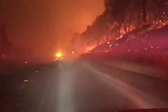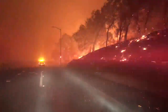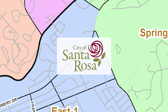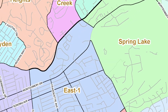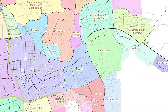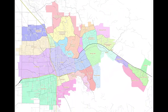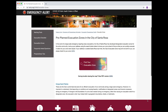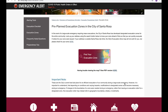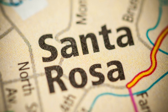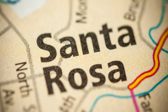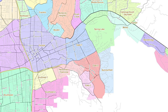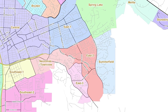In the event of a large-scale emergency requiring a mass evacuation, the City of Santa Rosa will announce evacuation warnings and orders using pre-planned evacuation zones. Find your evacuation zone with your address using the City's evacuation zone lookup tool. Please note this tool is only for addresses within the Santa Rosa city limits.